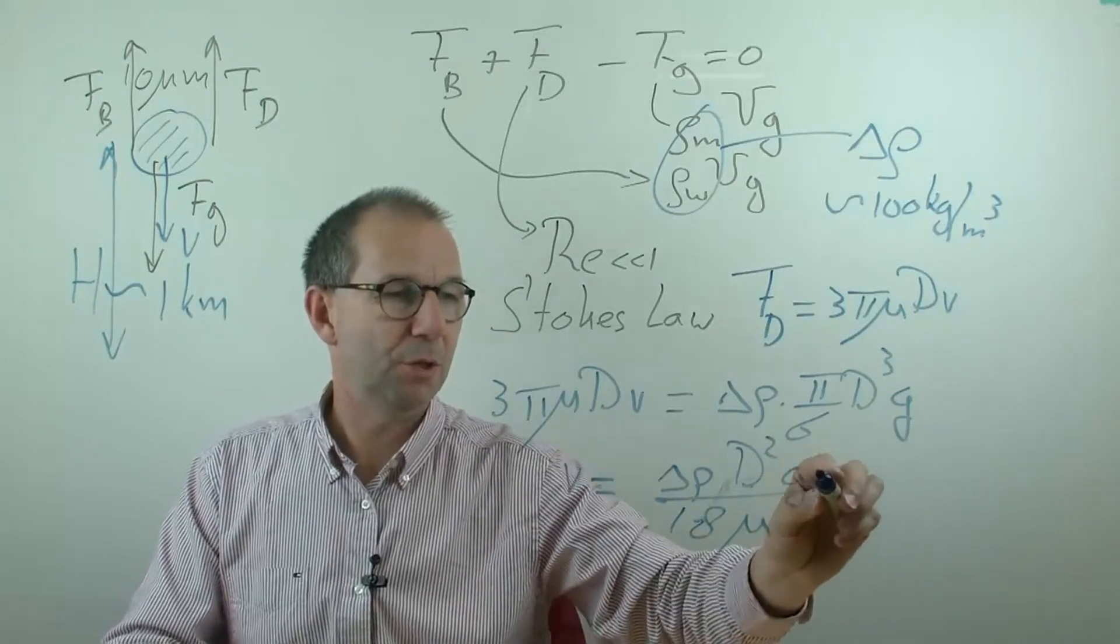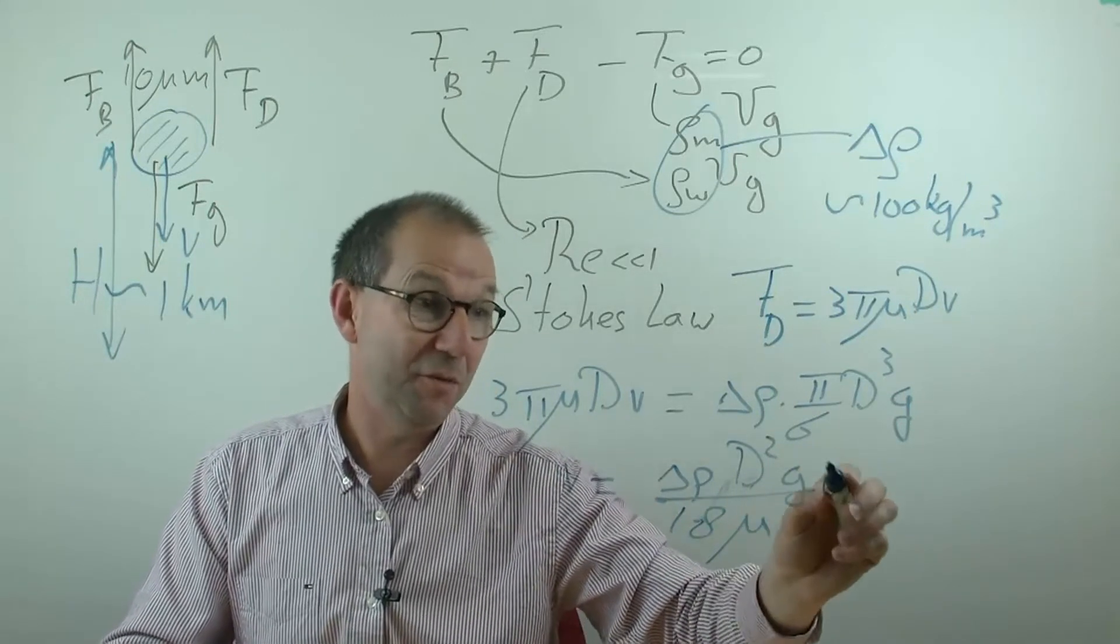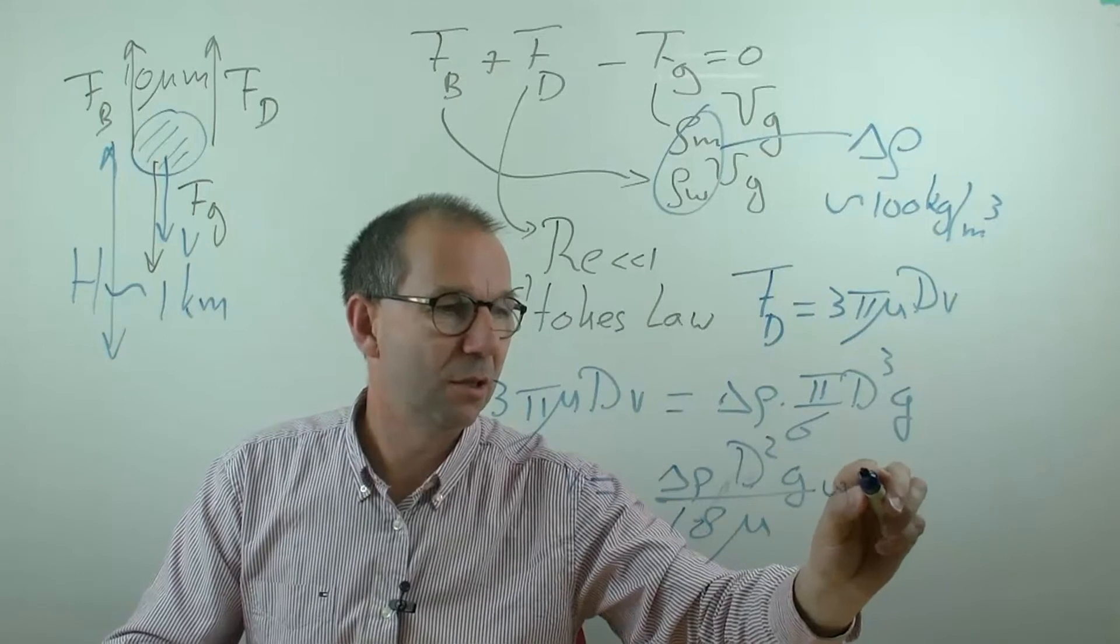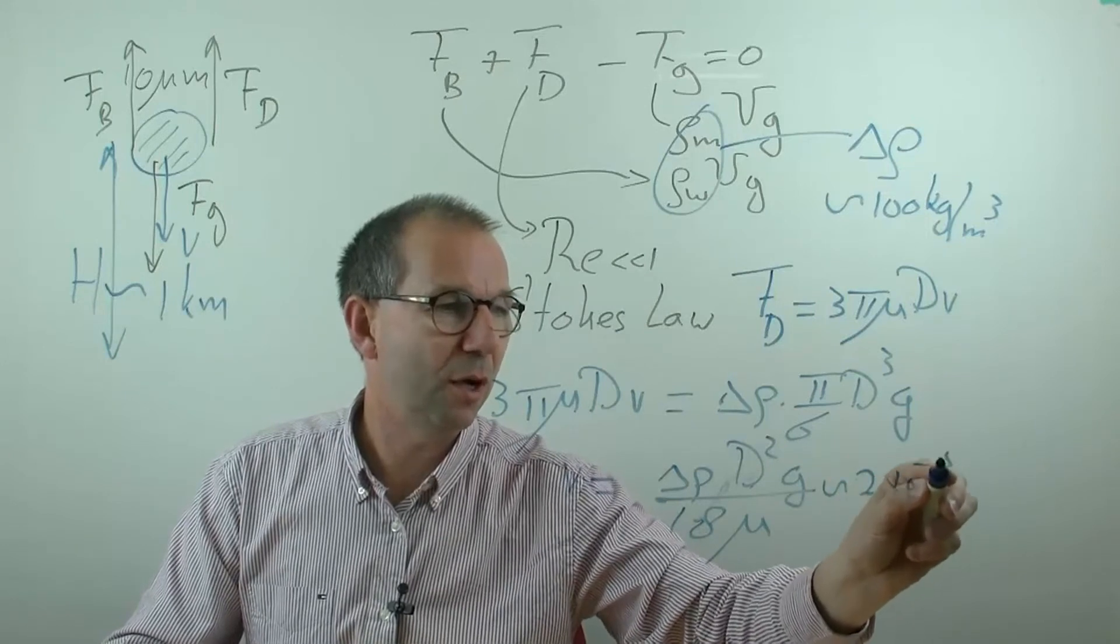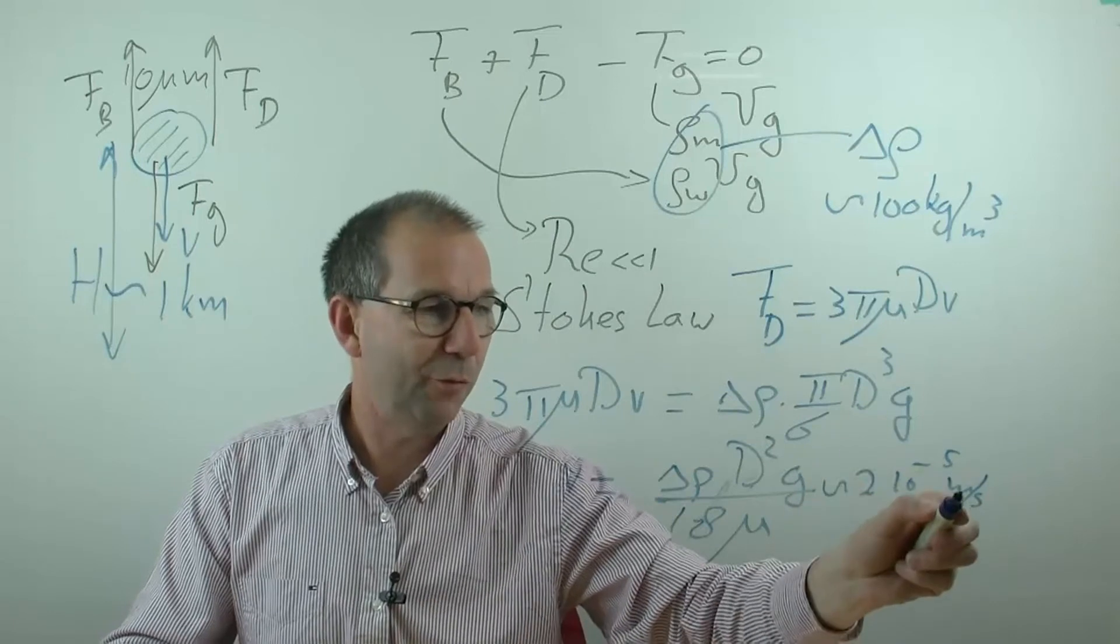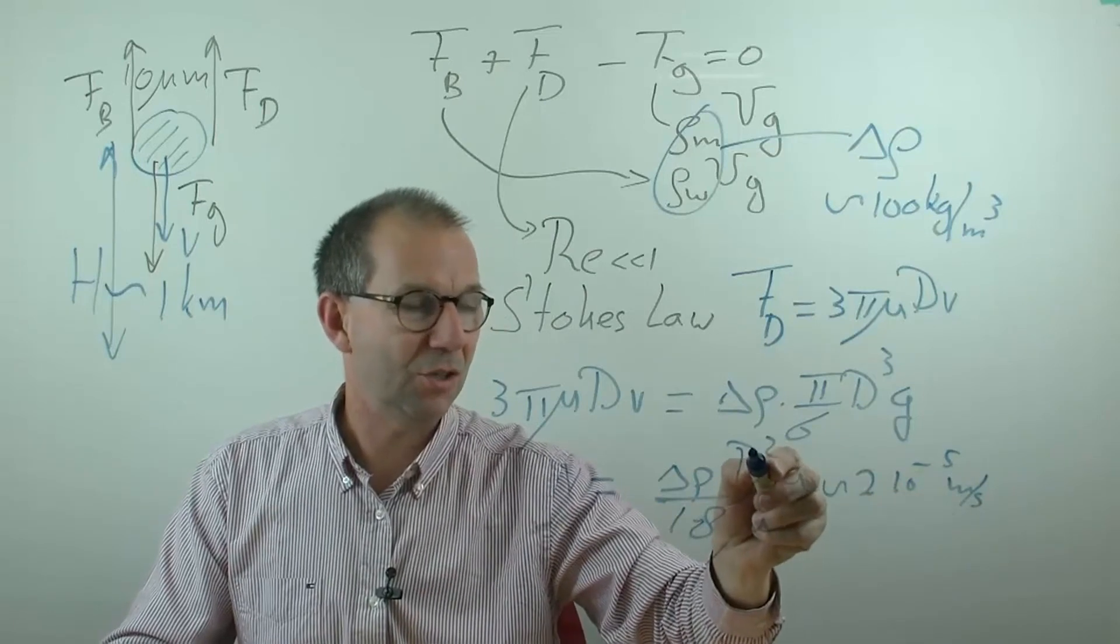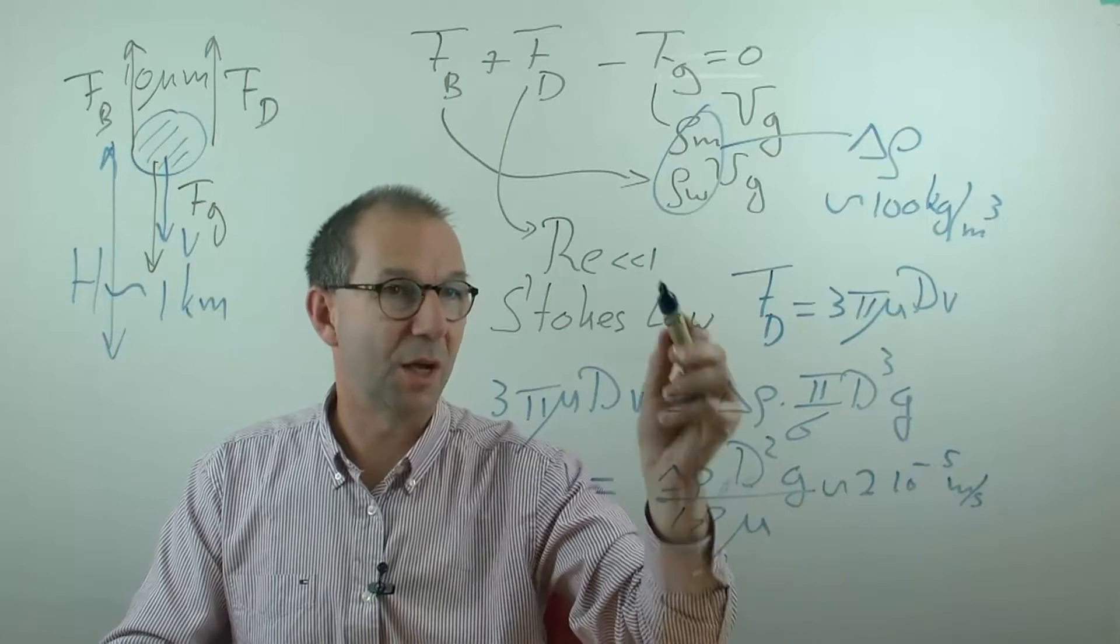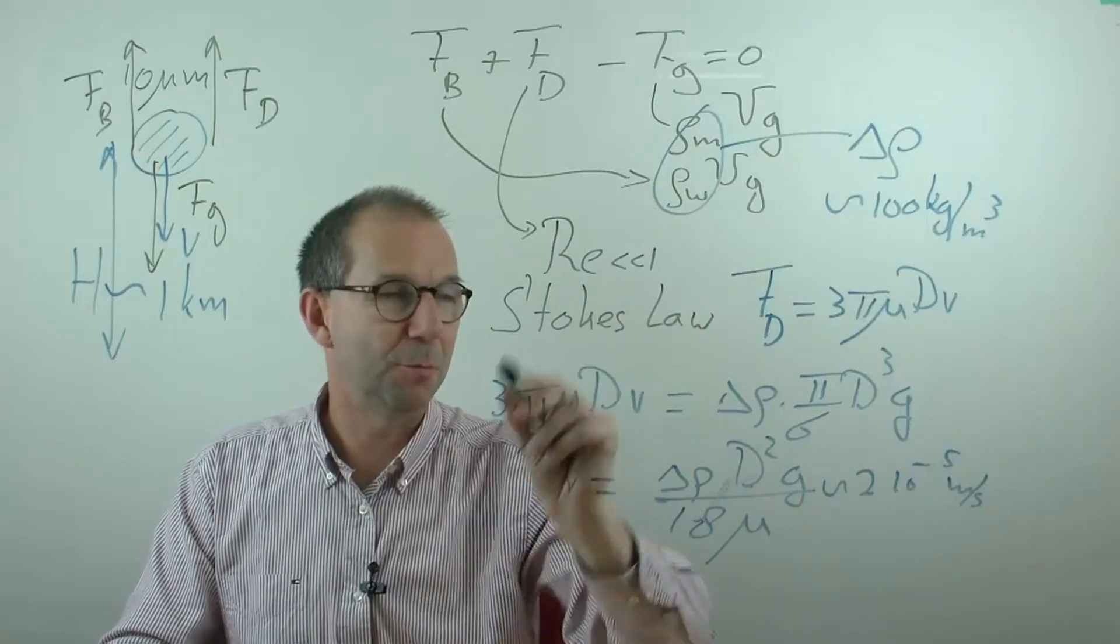If I compute this, I find indeed a very small velocity, 2 times 10 to the minus 5 meters per second. Compute for yourself what this velocity and this diameter gives you for the Reynolds number and make sure that it's much smaller than 1.